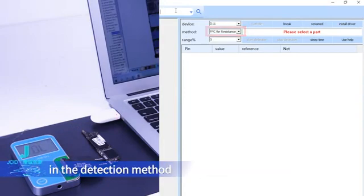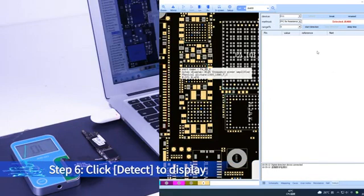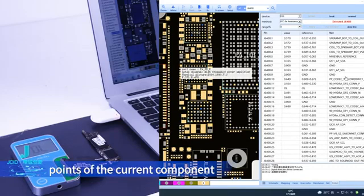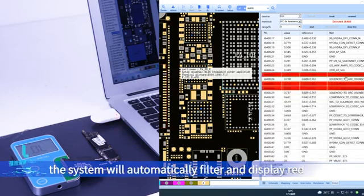In the detection method and select the component to be tested in the point bitmap. Step 6: Click Detect to display the measurement results of all points of the current component. If the measurement results exceed the set error range, the system will automatically filter and display red.